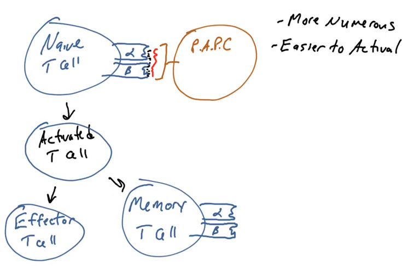These memory T cells are more numerous. They are easier to activate, so that whole process of T cell activation is much easier to accomplish for memory T cells. They are much longer lived, and naive T cells already live for a very long time, but memory T cells also live for a very long time.